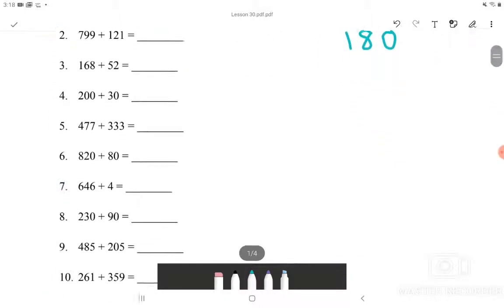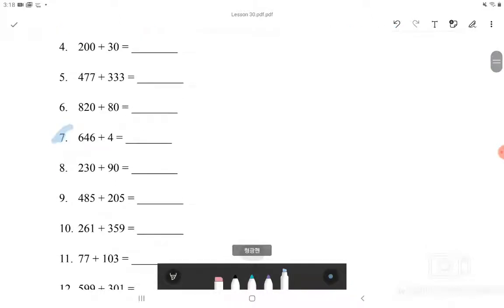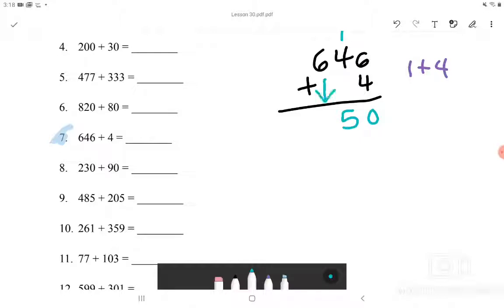Moving over to the next question which is number 7. We have 646 plus 4. 6 plus 4 is equal to 10, so we will put 1 over here and 0 down there. And then we will do 1 plus 4 which is 5. And 6 brought down will be equal to 6. So the answer for number 7 will be 650.